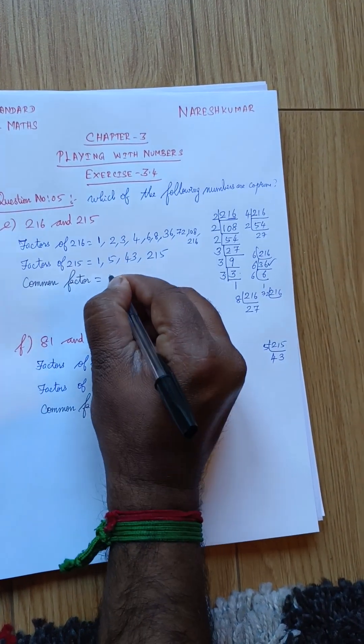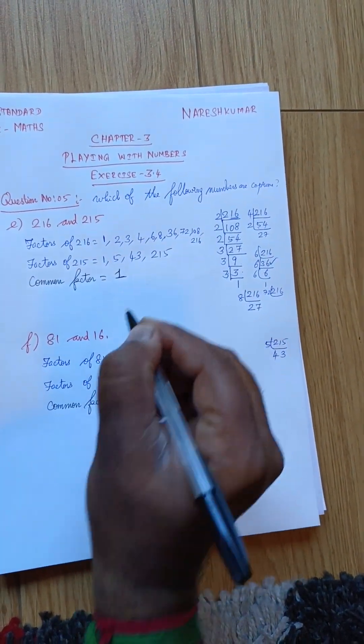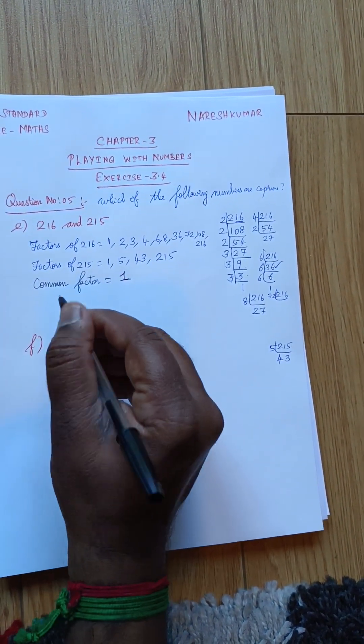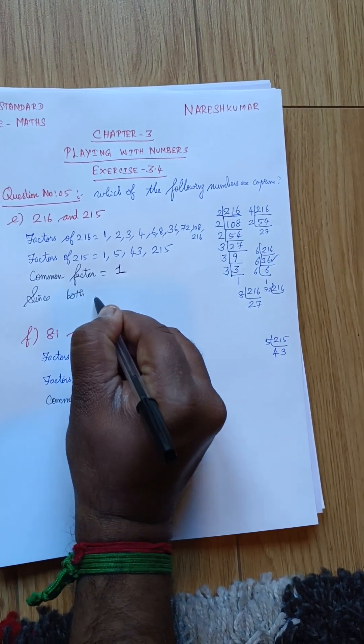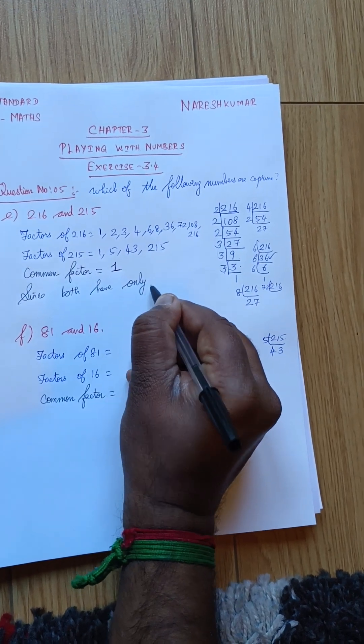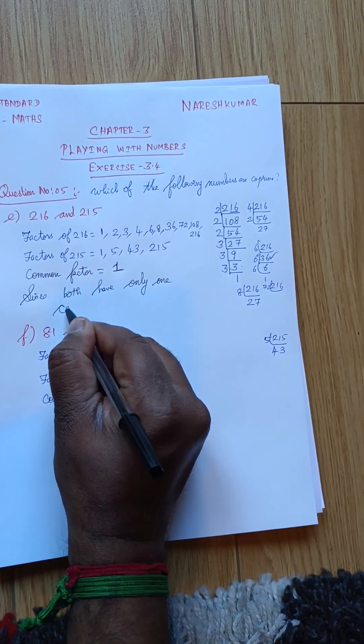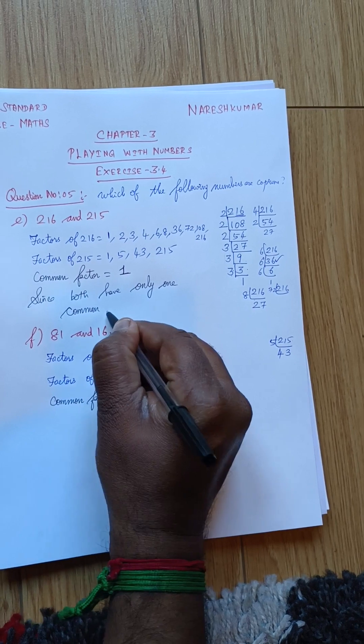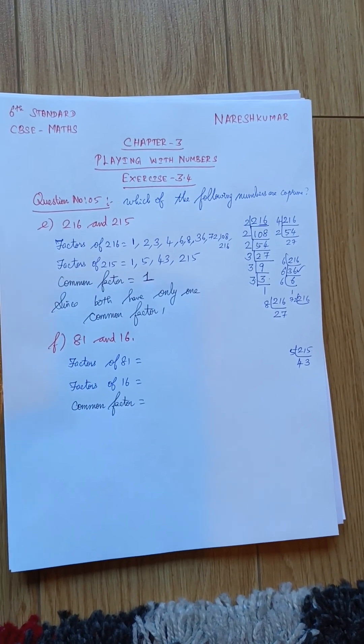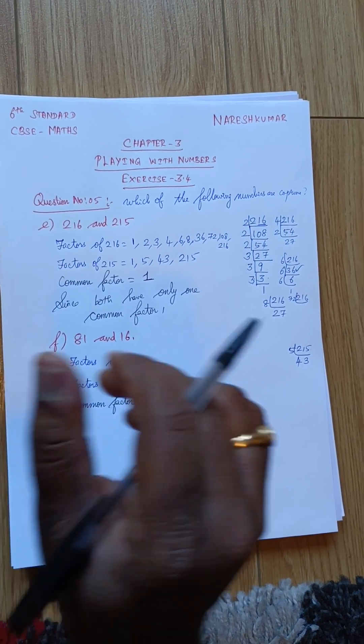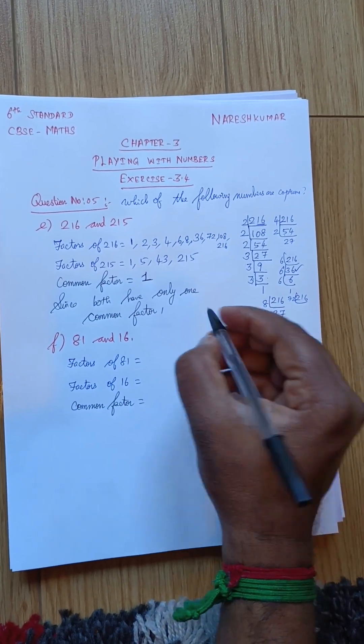So the common factor is 1. So now what we will do? Since both have only one common factor 1, so therefore, they are co-prime numbers.